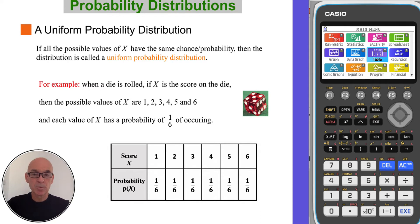If all the possible values of a random variable, X, have the same chance or probability, then that distribution is called a uniform probability distribution. For example, when a die is rolled, if X is the score on the die, each of the values of X, 1 through 6, has the same chance, 1 in 6. So this is an example of a uniform probability distribution.